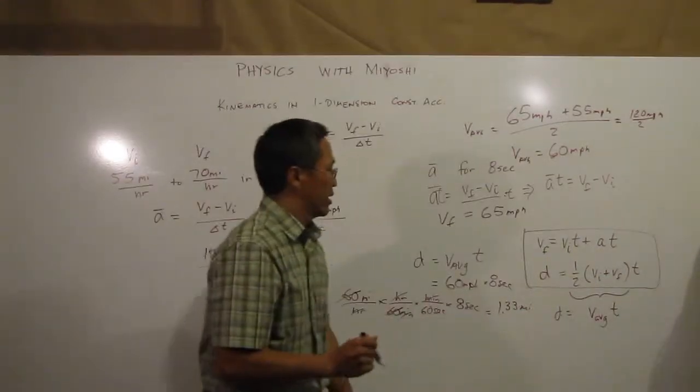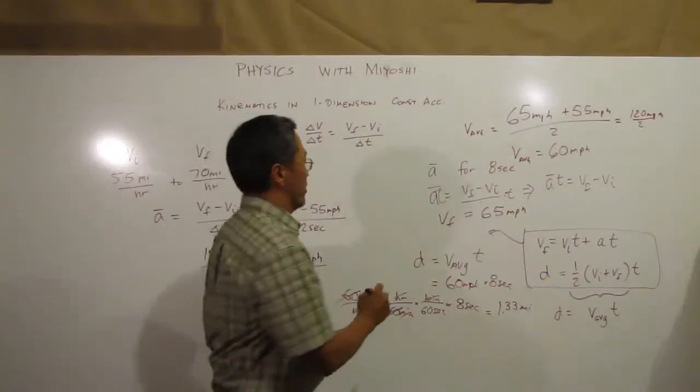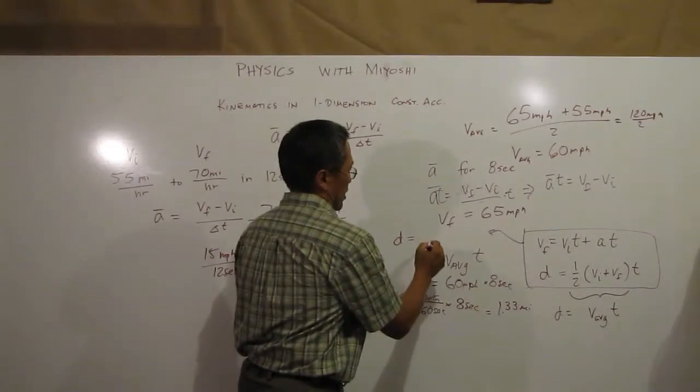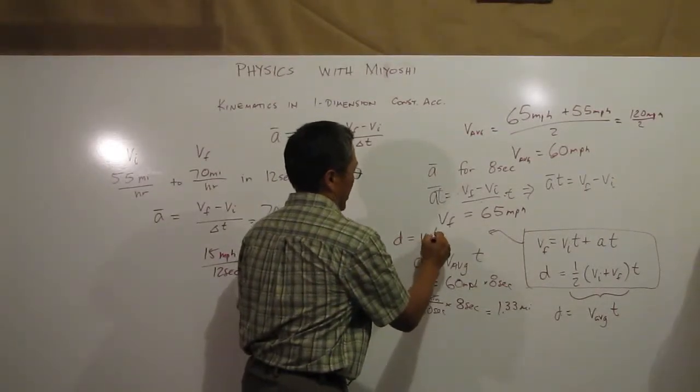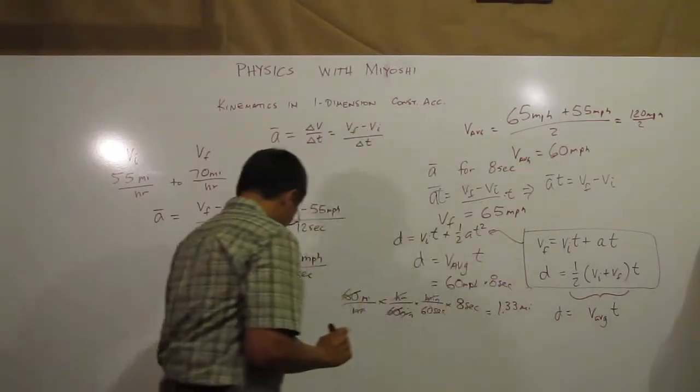So there's one other cool equation that you can come up with with these two equations right here, and that is with constant acceleration you can always get the final displacement or the distance is V initial times time plus 1 half A T squared.